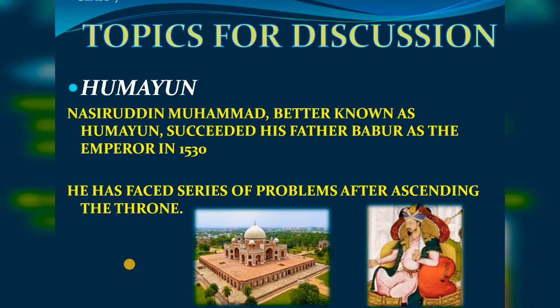The Battles of Chausa and Kannauj took place in 1539 and 1540, and due to these battles Humayun was defeated. These defeats forced Humayun to flee to Kabul, and thereafter to Persia, where he took shelter under the Safavid Shah.